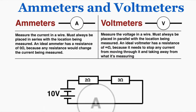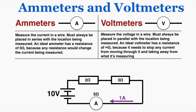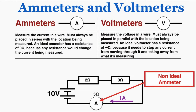Now let's imagine we place an ammeter that does not have a resistance of 0 — say it has a resistance of 5 ohms. The equivalent resistance of the circuit is now 10 (2 plus 3 plus 5), because the ammeter is in series with the other resistors. So the current is now 1 amp: 10 volts divided by 10 ohms equals 1 amp. The ammeter is changing the current it's supposed to measure, which is bad. This is a non-ideal ammeter, and unfortunately in the real world all ammeters are non-ideal to some extent, though most have very low resistances.